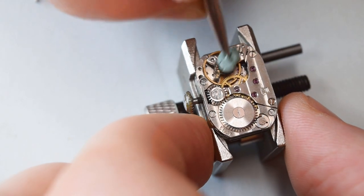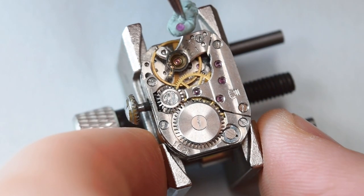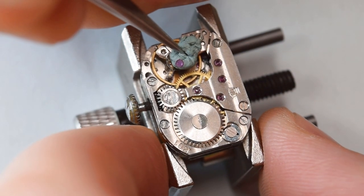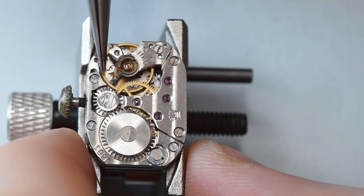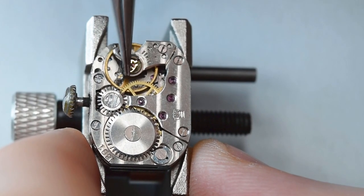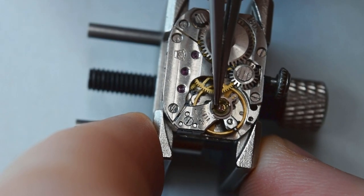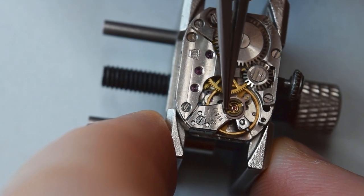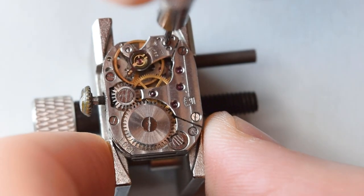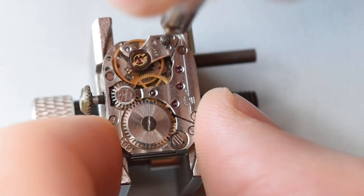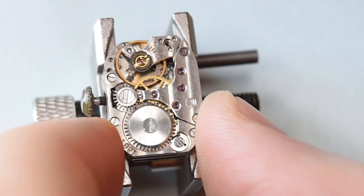Now this balance stone—the capstone is removed, but the chaton with the jewel doesn't want to come out. I think when I do cleaning it will be simple to remove. It will just fall down.